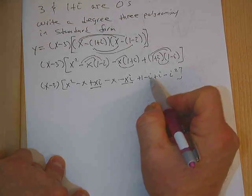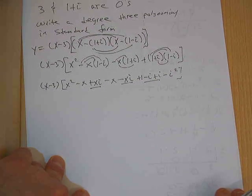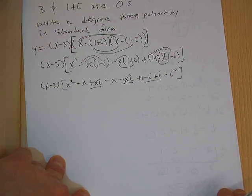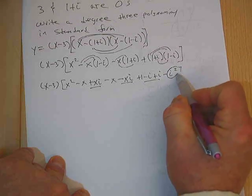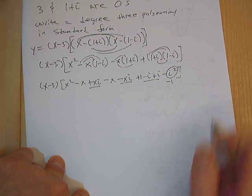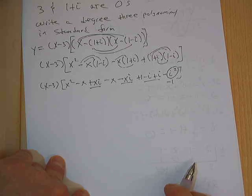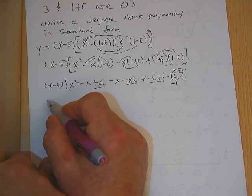xi and negative xi, what's that equal? Zero. Negative i plus i, what's that equal? Zero. What does i squared equal? Negative 1.